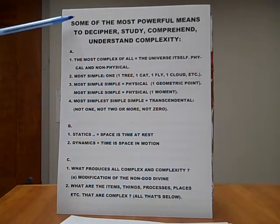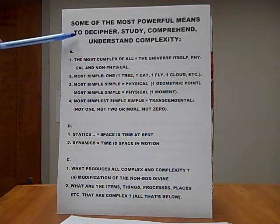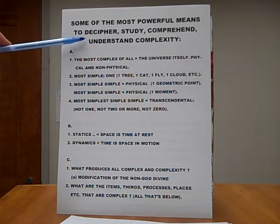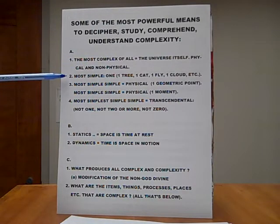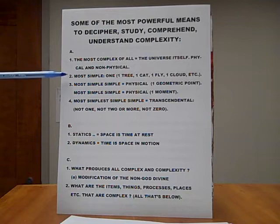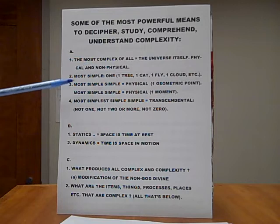To continue, some of the most powerful means to decipher, study, comprehend, and understand complexity. A. Number one, the most complex of all equals the universe itself, physical and non-physical. Number two, the most simple thing is one. One tree, one cat, one fly, one cloud, etc.